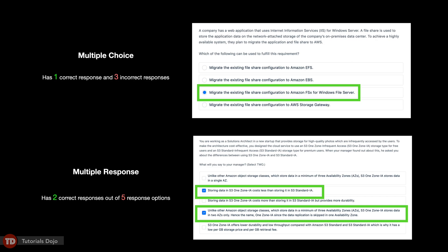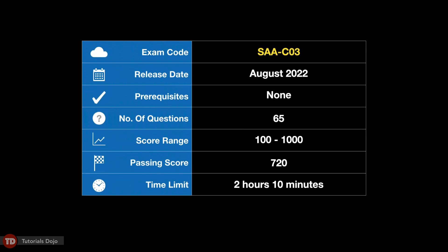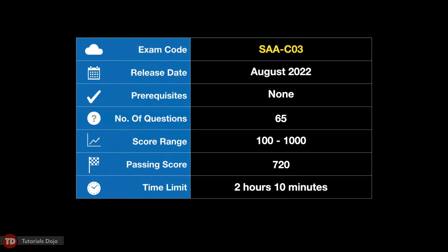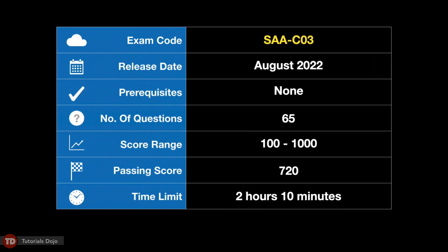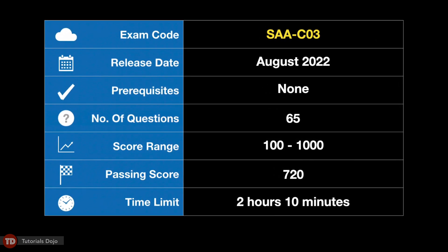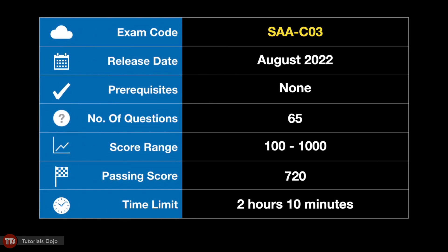You can take the exam from a local testing center or online from the comfort of your home. The exam has 65 questions that you should complete within two hours and 10 minutes. The score range for this test is from 100 to 1,000 with a minimum passing score of 720. AWS uses a scaled scoring model to equate scores across multiple exam types that may have different difficulty levels.